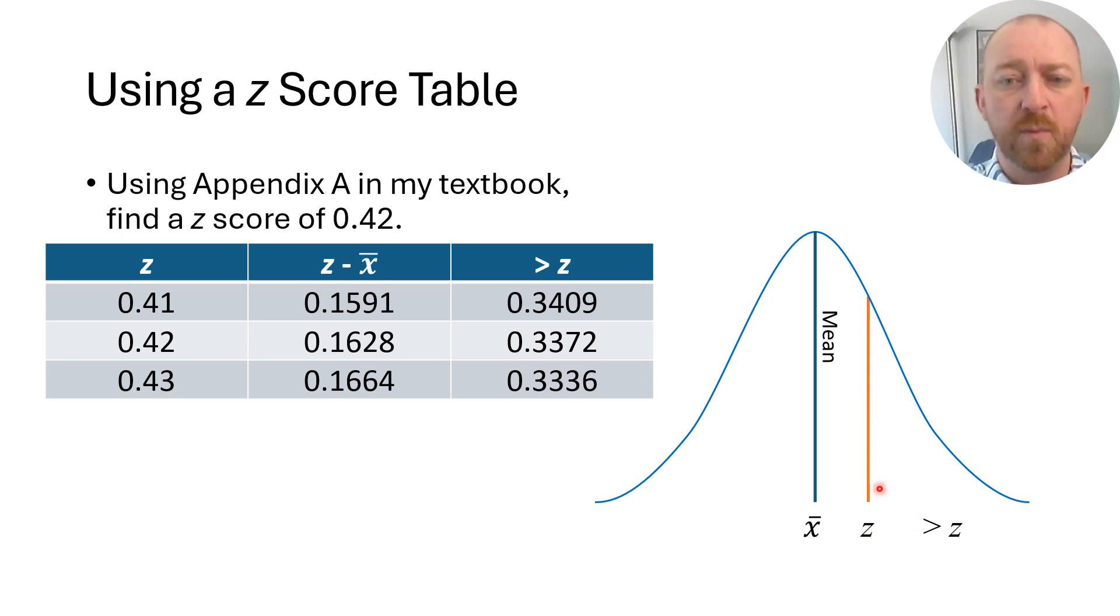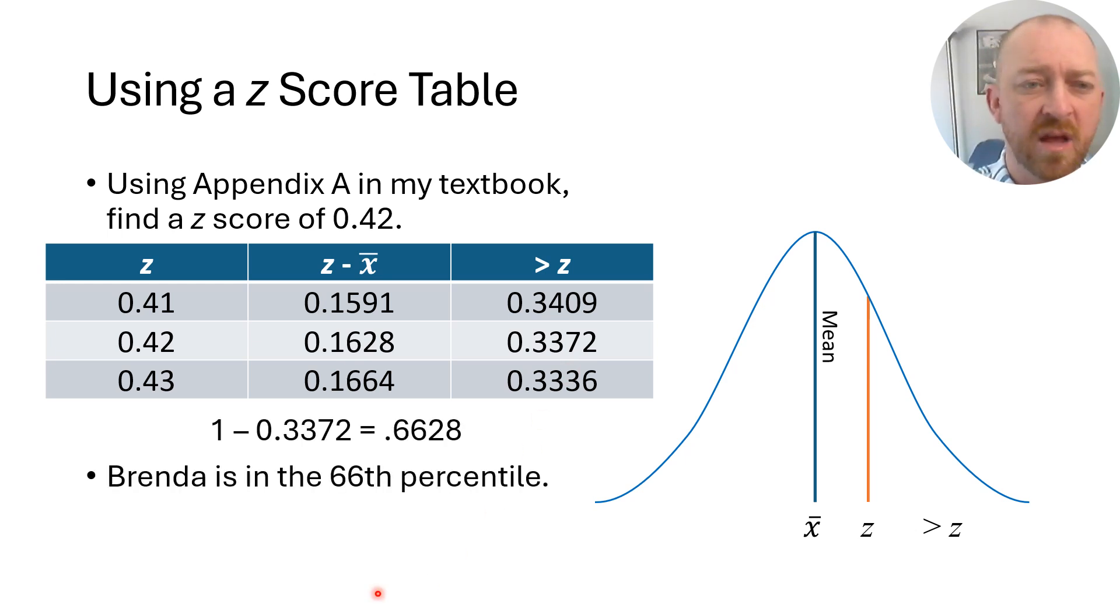So then what are we to do? If we want to find out what percentile Brenda falls into, we need to figure out essentially how many people are below her, what proportion of the population falls below a z-score of 0.42. Probably the easiest way to do that is to take one, which would include everybody, 100% of the distribution. Then we just want to subtract everybody that is above the z-score of Brenda. So we would subtract 33.72%. One minus 0.3372, or 100% minus 33.72%, is 66.28%.